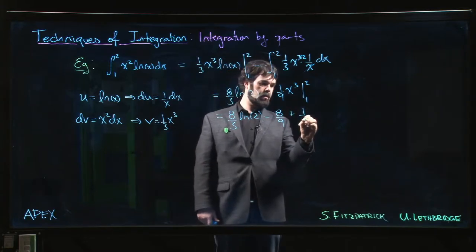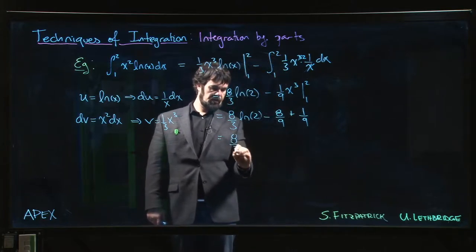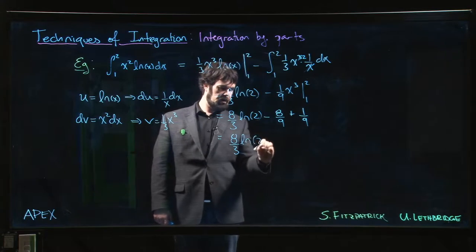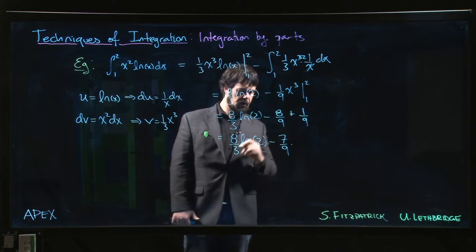And we have minus 1 over 9. Might as well combine those two fractions: 8 over 3 log 2 minus 7 over 9.